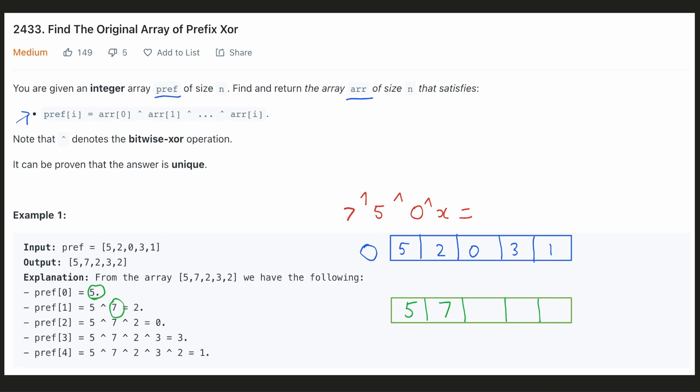For the next number we have to find a number such that 7 xor 5 xor that number is equal to 0. And from the example we could see that 2 satisfies this condition.